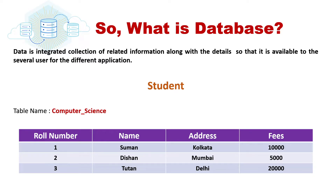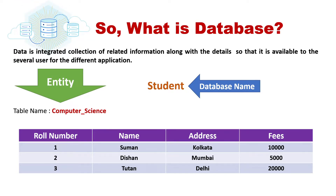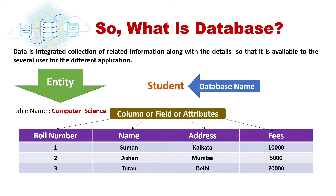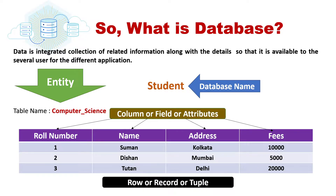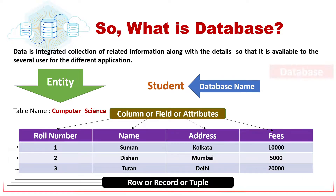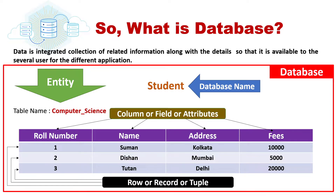So, what is a database? Data is an integrated collection of related information along with the details, so that it is available to several users for different applications. Suppose here is a database named as student, and it contains an entity — the table name known as computer_signs. The columns or fields or attributes are: row number, name, address, and fees. The row or record or tuple is represented per row, such as row number 1 for name Shumon, address Kolkata, and fees 10,000. That completely gives us the conception of a database.